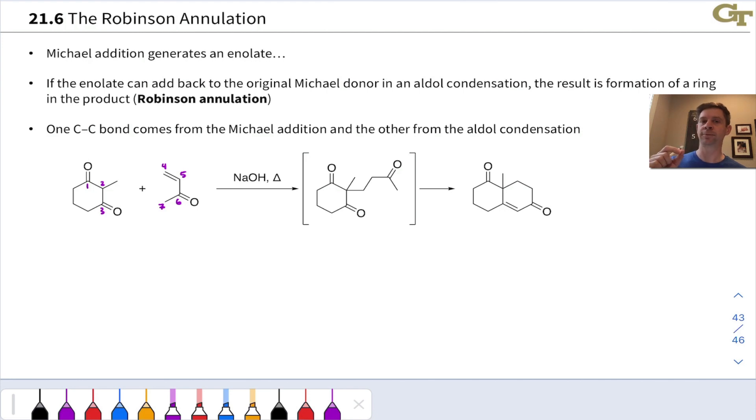The Michael acceptor acts as a nucleophile in the ensuing aldol condensation, and is set up so that it has an electrophilic carbon at what we might call carbon one and the potential to form an enolate at carbon four. So it's an electrophile on one end and a nucleophile on the other.